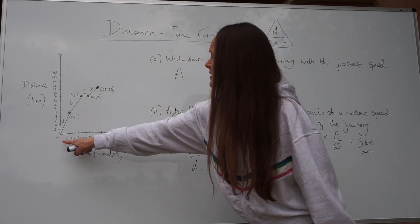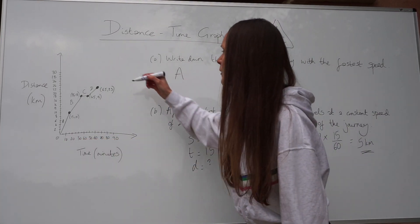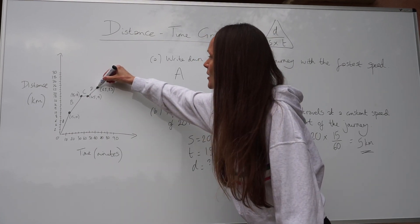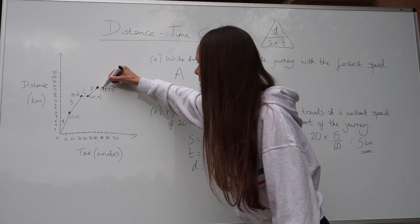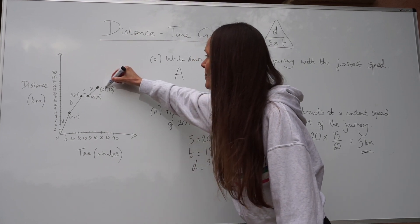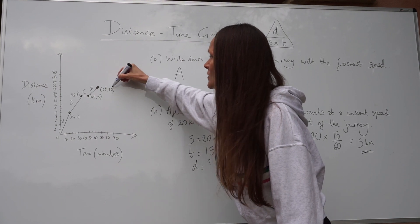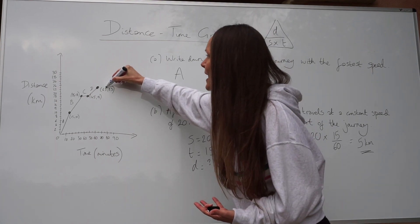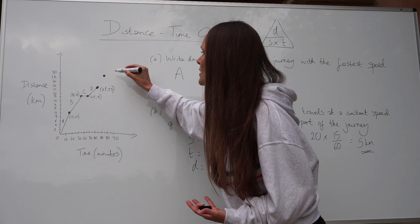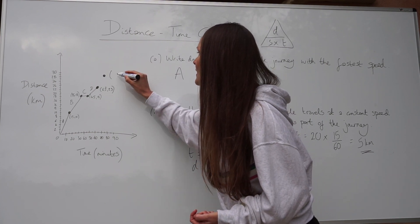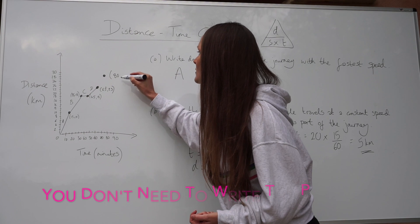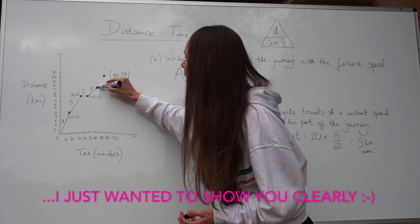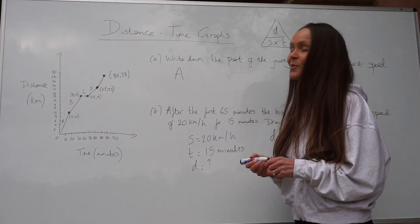So here is time in minutes. So we need to make sure we go along 15 minutes. So this point is at 65 minutes. So 65 plus 15 is 80. So that takes us to about here. And then we need to add on five kilometers. So at the moment, we're in line with 23 kilometers. So 23 plus 5 is 28. So you'll go up to 28. So that point that you need to mark there is 80 along the x-axis, 28 along the y-axis. And then you just take your ruler and a pencil and join up those points. And that's it. We've done part B.